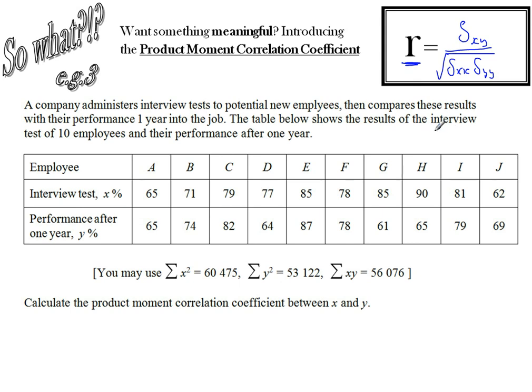We've got a set of data here from interview tests taken by potential employees for a company. And they have some measure of their test result. And then they have a measure of their performance in the job later on if they were actually hired. And you've got these pairs of data. So this person scored 65% of their interview test. And their performance was measured, I don't know how it was measured, but it was measured as 65% one year later. So we've got these pairs, 10 pairs of data. And you'll see here that, and this is common.